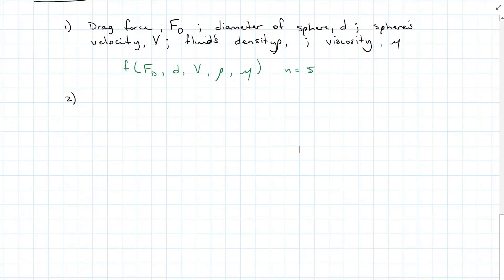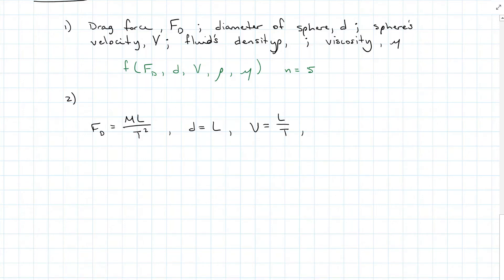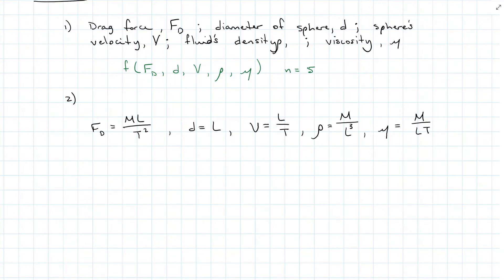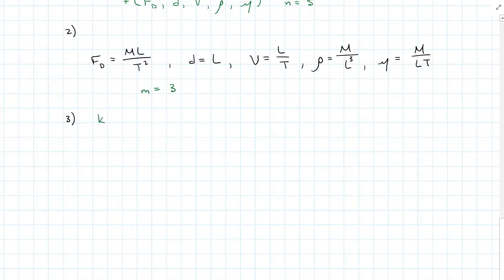Next, list the dimensions of each variable. Drag force is mass × length / time². Diameter is just a length. Velocity is length over time. Density is mass over length cubed. Viscosity is mass over length × time. We have m's, l's, and t's, so our dimension count m is three. That means our reduction number k is five minus three, so k = 2 — two pi equations.